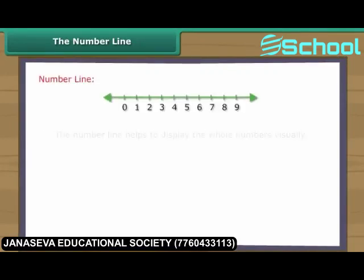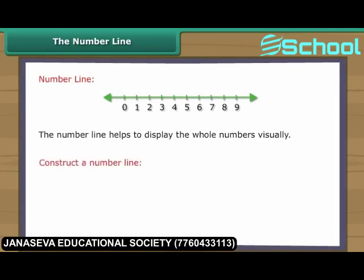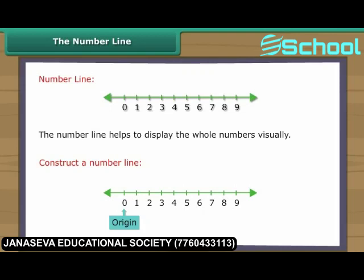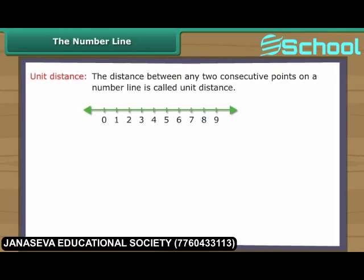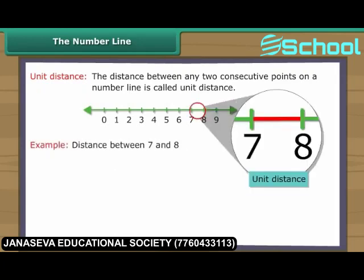The number line helps to display the whole numbers visually. To construct a number line, we draw a straight line and choose any point on the line and label it zero — this point is called the origin. We then choose some convenient length and, moving to the right, mark off consecutive intervals along the line starting at zero. We label each new interval endpoint with the next whole number. The distance between any two consecutive points on a number line is called unit distance.